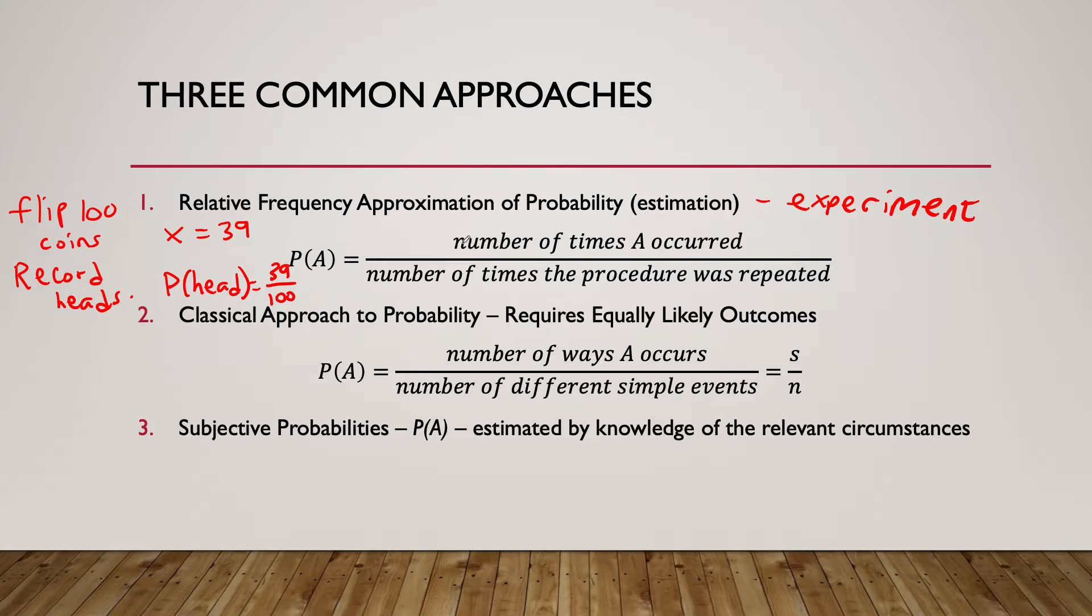The classical approach to probability is the probability we all think about. It requires equally likely outcomes. Probability of A equals the number of ways A occurs divided by the number of different simple events, or written as S over N. For a fair coin, the probability of heads is one way for a head to occur out of two simple events, heads or tails. Note how these are not equal.